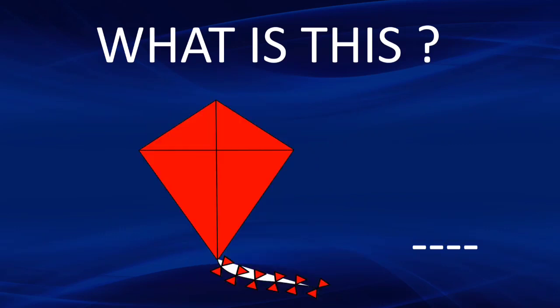Next here we are having a kite. To spell kite we have to write K-I-T-E. Kite.